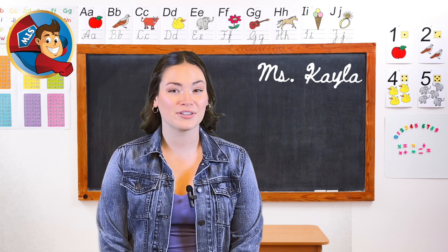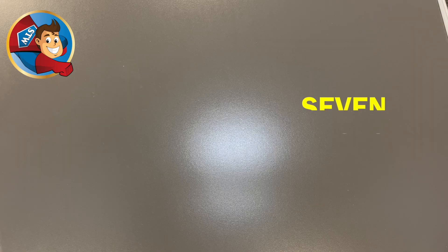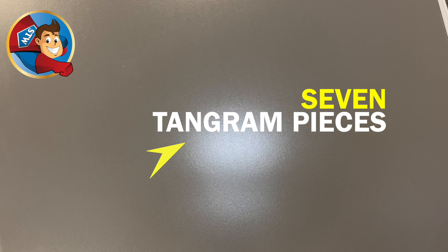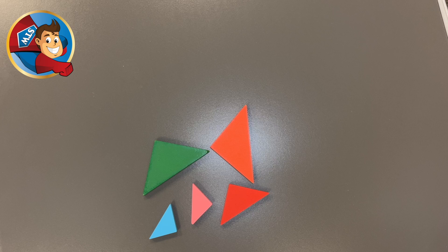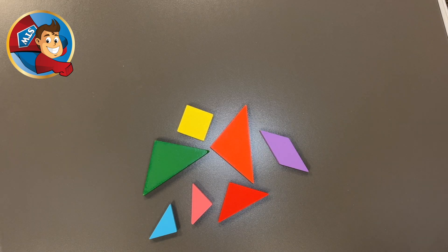First, introduce the different tangram shapes to your students. For this activity you will need seven tangram pieces: two big triangles, one medium triangle, two smaller triangles, a parallelogram, and a square.